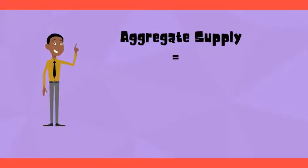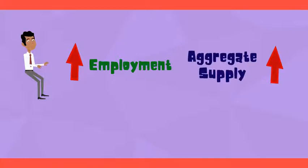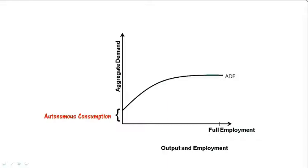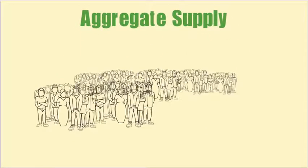Now, remember that aggregate supply is the minimum amount of revenue that the entrepreneurs expect. So as employment and output increases, their expectation about the minimum amount of revenue should also increase. Hence, our aggregate supply function looks like this. This function in the beginning will grow gradually, but as the society reaches near full employment, the expectation of the minimum amount of revenue that the entrepreneur should get will start increasing at a faster rate. Notice that once full employment is reached, the aggregate supply function becomes a straight line, because everyone in the economy has jobs now, so the function cannot go beyond this area.